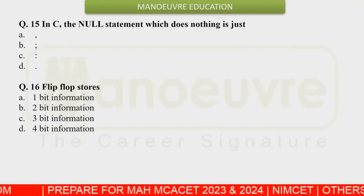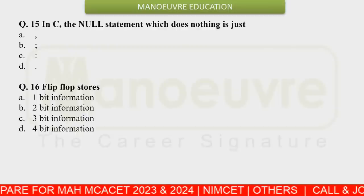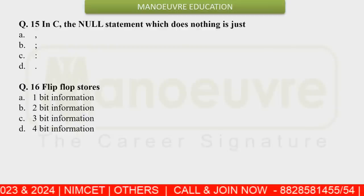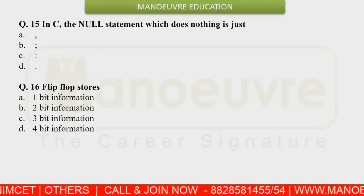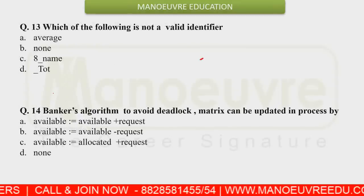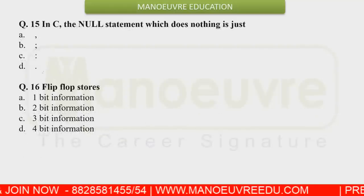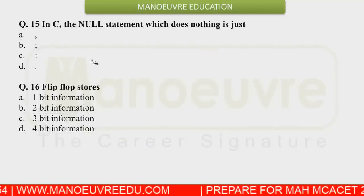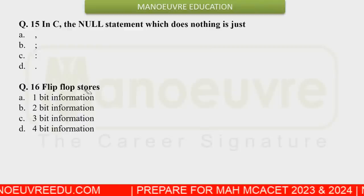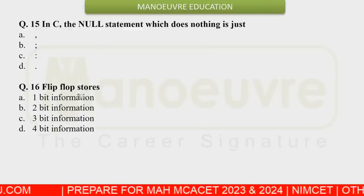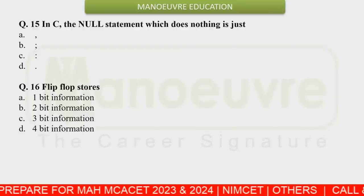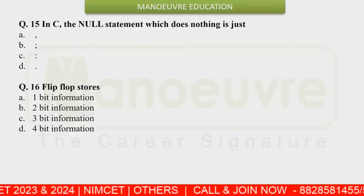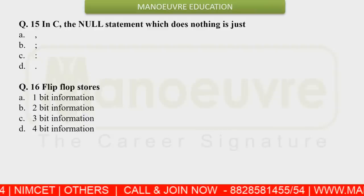Question 15 asked how a null statement is indicated in C. A null statement is always indicated with a semicolon, so option B is the right answer. There was also a question about flip flops — flip flops always store one bit of information, so the right answer is option A.